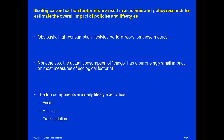Ecological footprints and carbon footprints are used in academic research and policy research to estimate the overall impact of policy and lifestyle choices. High consumption lifestyles perform worse than low consumption lifestyles on these metrics. But surprisingly, the amount of things a person consumes isn't really the biggest lever for determining the ecological footprint. Food, housing, and transportation tend to matter much more than the sorts of things you purchase, because food, housing, and transportation are things that we use every day, day in and day out, all the time.